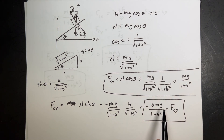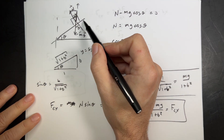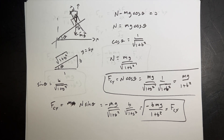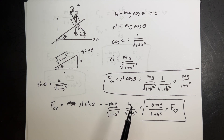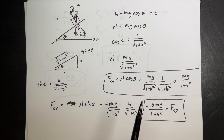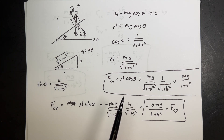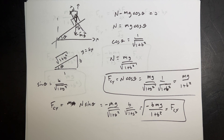We don't normally write the normal force decomposed this way, because usually we'd call the along-incline direction x and the perpendicular direction y. But we set it up this way to illustrate Lagrange multipliers. That's how you find the force of constraint. We can use this exact same idea for more complicated situations where we can't easily check the answer. More examples will be in the playlist down below — hope you find that useful!